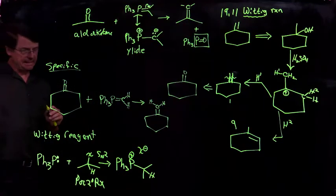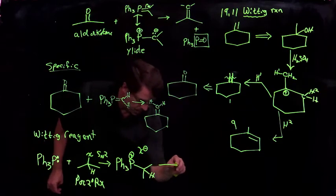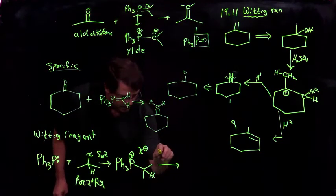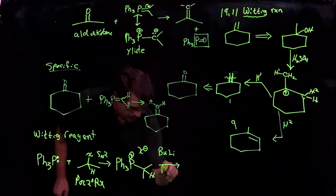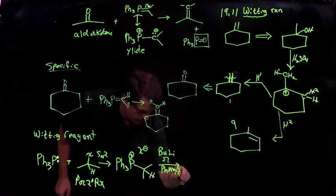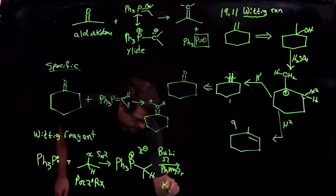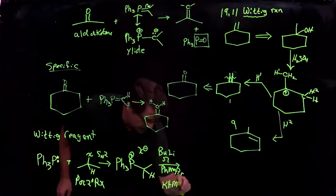And then we need a base. And if we treat these with bases, they're strong bases typically. Could be butyl lithium. Could be Grignard. Or strong amine bases like KHMDS.